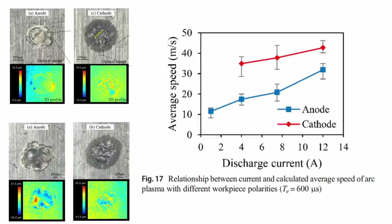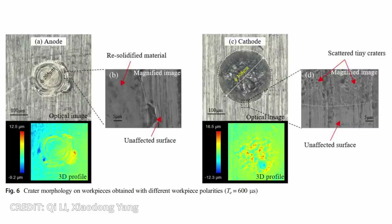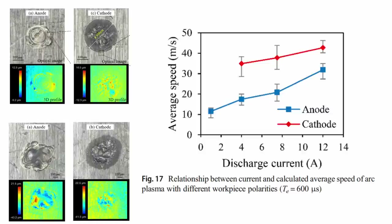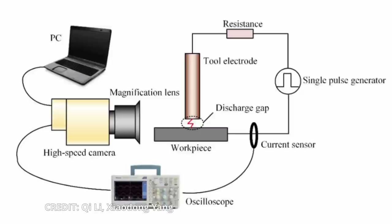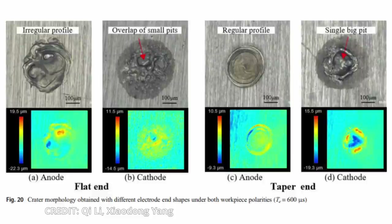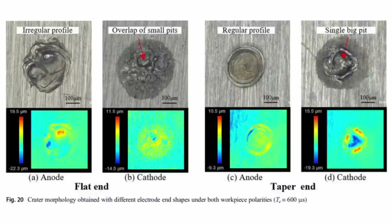The cathode crater was deeper with lapped pits. Around the edge of both cathode craters a band of tiny craters can be observed. One striking difference between the two is the speed of the moving arc — the arc plasma moving speed with a cathode workpiece was always higher than that with an anode workpiece under the same discharge conditions. The movement speed of the arc could weaken the stability of the arc plasma. The experiment used a tool electrode brought up to the sample surface and a discharge was initiated. When the workpiece polarity was the same the diameter of the crater was larger in the case of the flat end. But when the workpiece was an anode, the crater shape generated with the taper end electrode was more regular than that generated with the flat end. In comparison, when it was the cathode the crater shape generated with the taper end was a single big pit, while in the case of the flat end electrode the crater shape was an overlap of small pits.